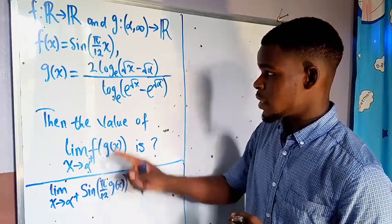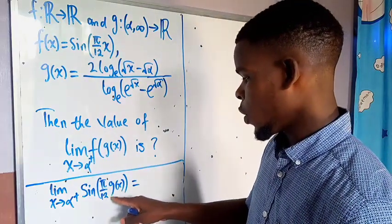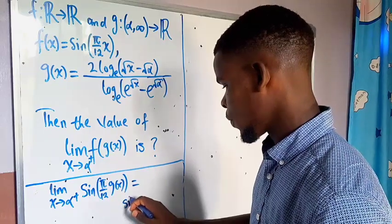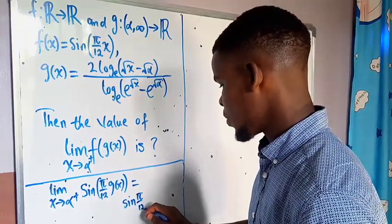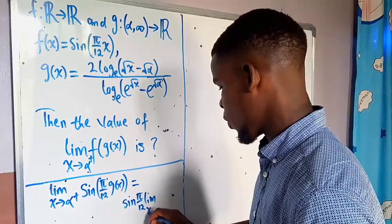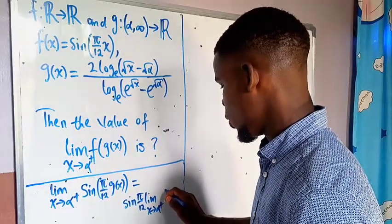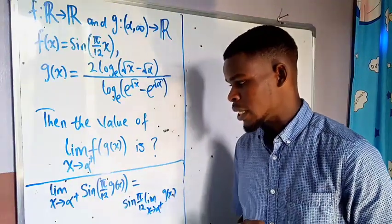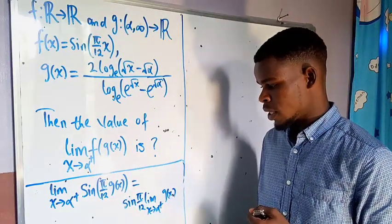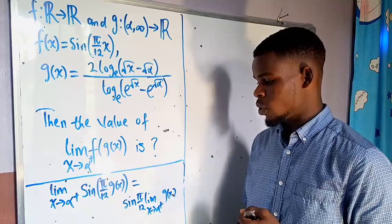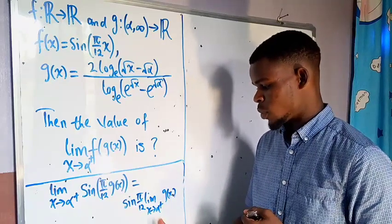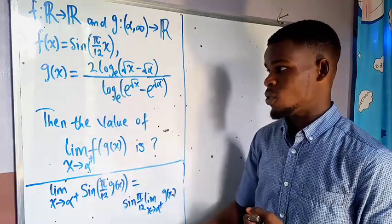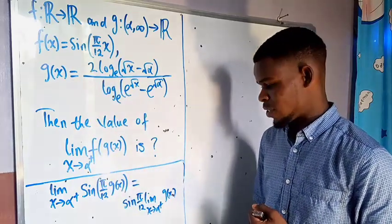That tells us the limit of sine of pi over 12 times g(x) can be written as sine of pi over 12 times the limit as we approach alpha from the right of g(x). Since this is a continuous function, we can take it out of the limit notation, and since pi over 12 is just a constant multiple with g(x), we can also take it out of the limit notation.